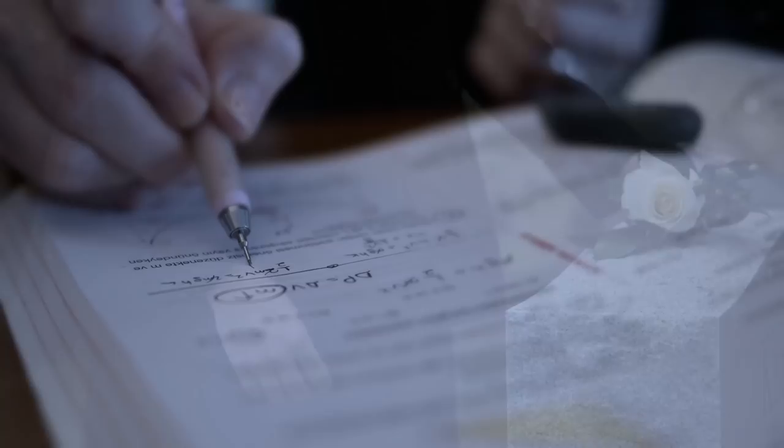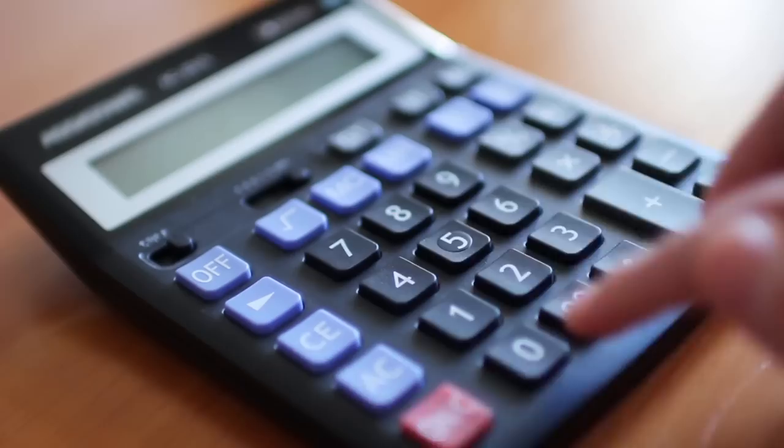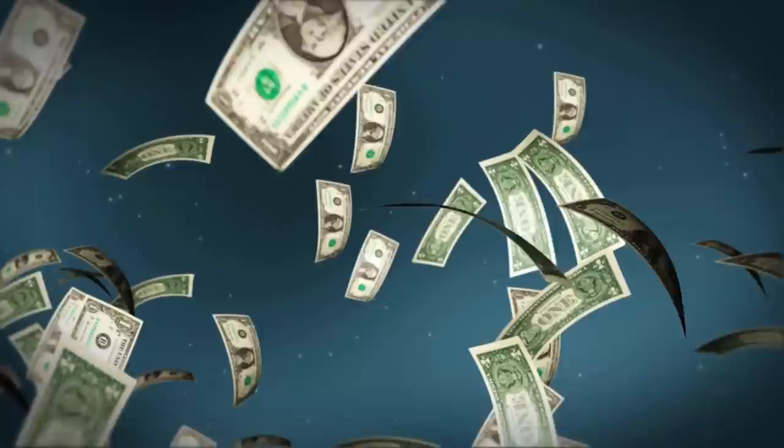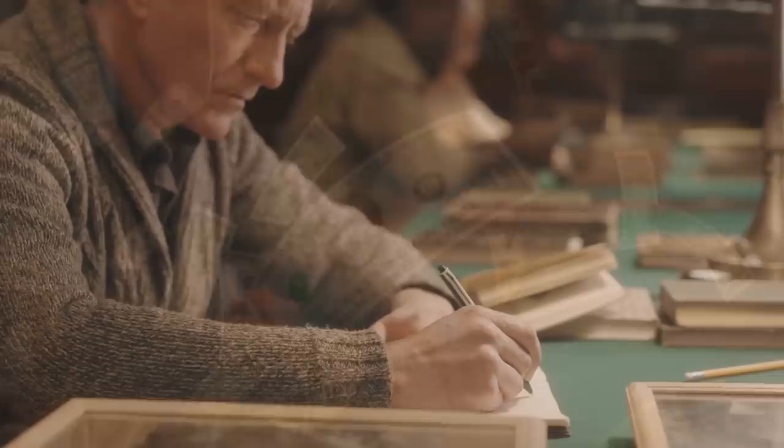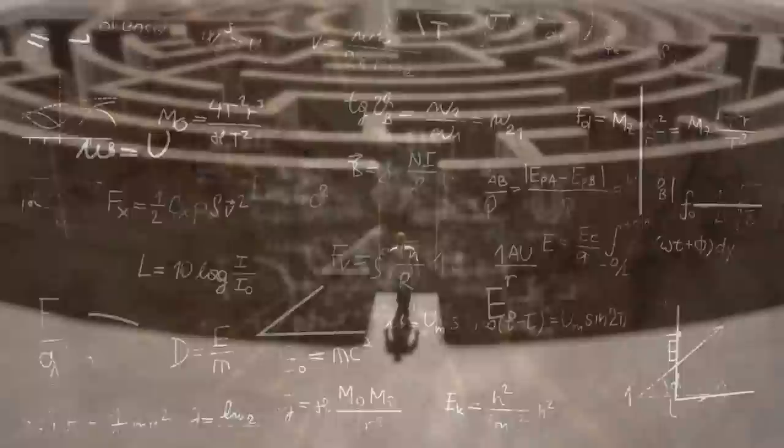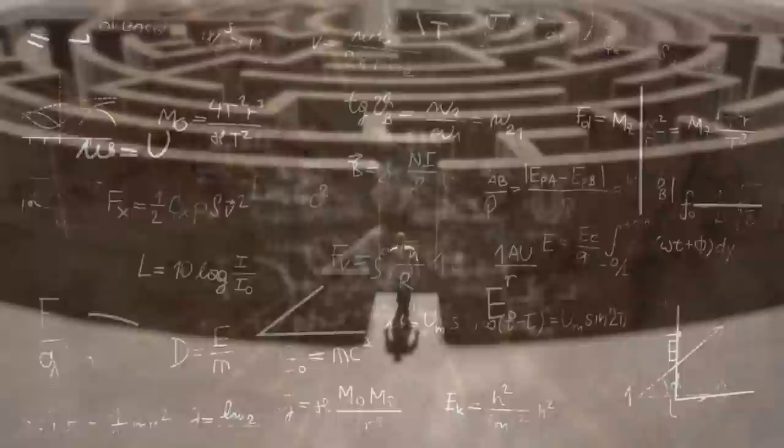Although unable to complete his work Bachelier had shown others the way. All it needed was for someone to work out how to price options accurately. And they would have the secret to unlimited wealth. Throughout the 50s and 60s some of the finest academic minds got to work to try and find this holy grail. But after 20 years of struggle the academics were no nearer to pricing options than they had ever been. It seemed that Bachelier's elusive magic formula would never be discovered. But all this was about to change.